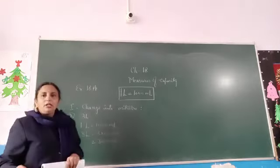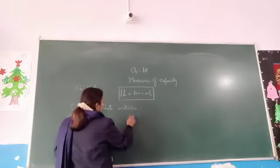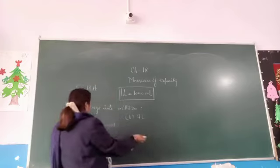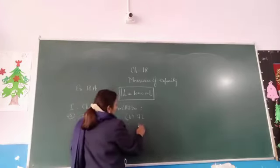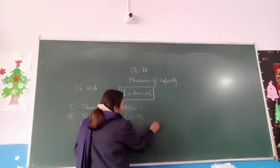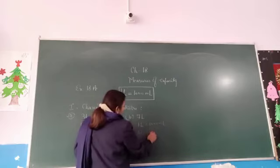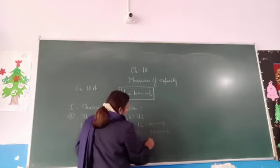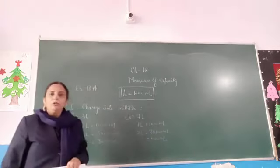In this way we will solve the rest of the parts of this question. B part: the question is 7 liter. Same pattern we will follow. First line we will write 1 liter is equal to 1000 milliliter. So 7 liter is equal to 7 multiplied by 1000 milliliter. The answer is 7000 milliliter. Now I will move to the next question.